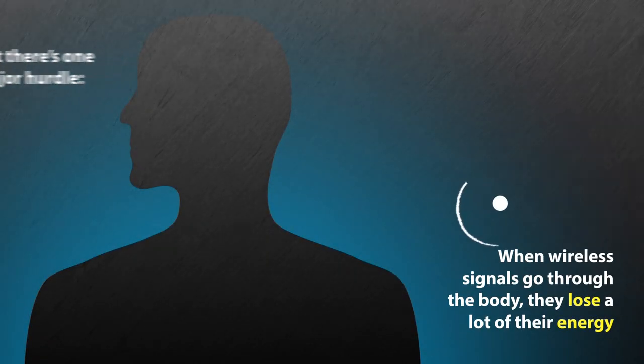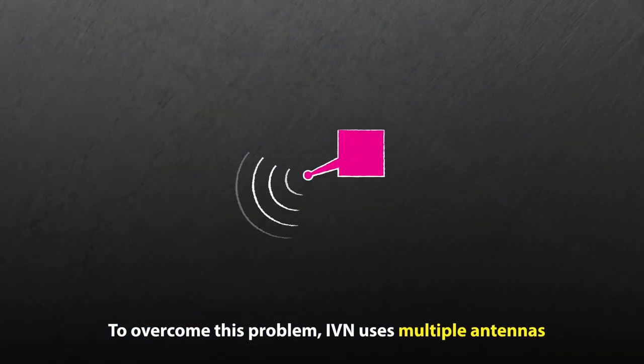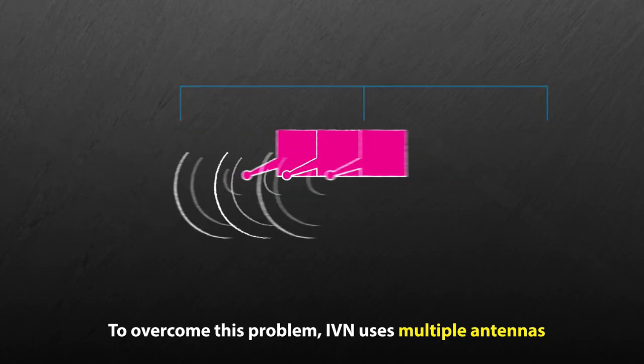When wireless signals go through the body, they lose a lot of their energy. To overcome this problem while transmitting signals that are safe for humans, IVN uses multiple antennas.